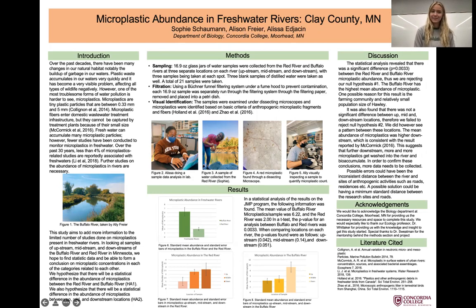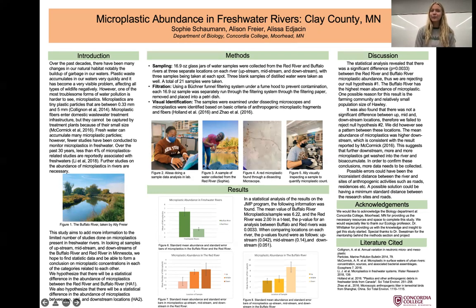Over the past couple decades there have been many changes in our natural habitat, notably the buildup of garbage in our waters. Plastic accumulates in our waters very quickly and it has become a very visible problem affecting all types of wildlife negatively. However, one of the most troublesome forms of water pollution is harder to see: microplastics, which are plastic particles less than five millimeters in size.